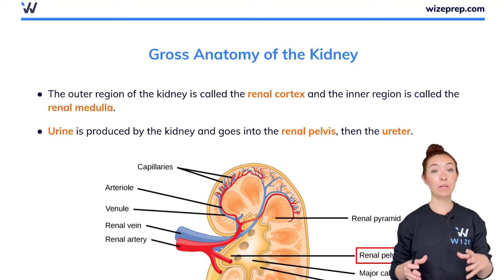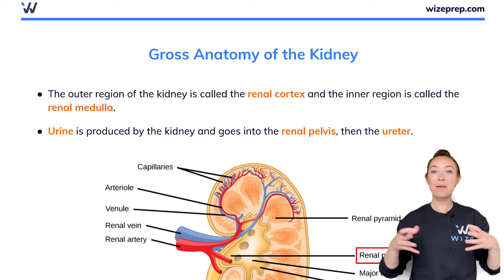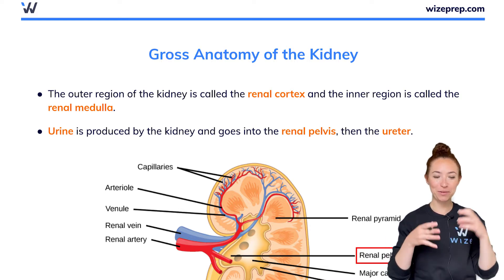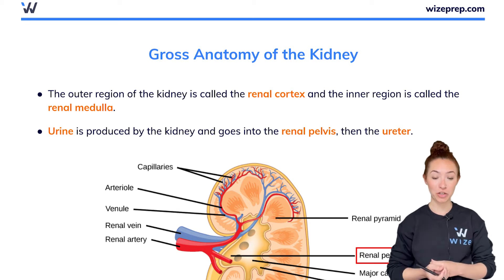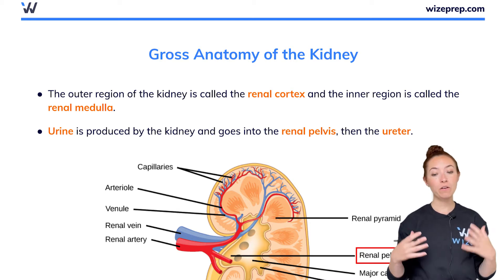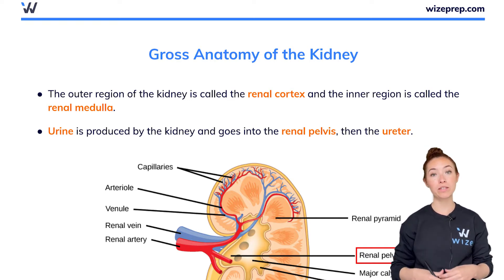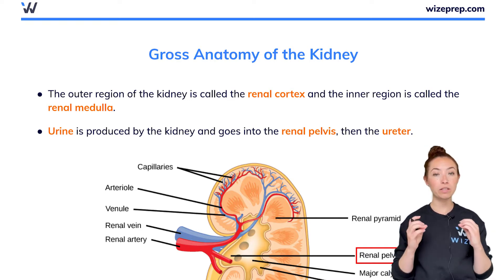Let's discuss the gross anatomy of the kidney. When I say gross, I don't mean disgusting — I mean the macroscopic anatomy of the kidney, as opposed to the microscopic anatomy that we're going to do in the next section. The information in this lesson is expected to know for the MCAT, so make sure to review this before your exam so that you can keep all these different parts in mind.